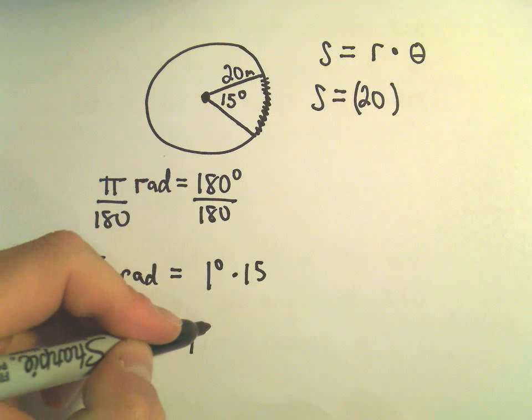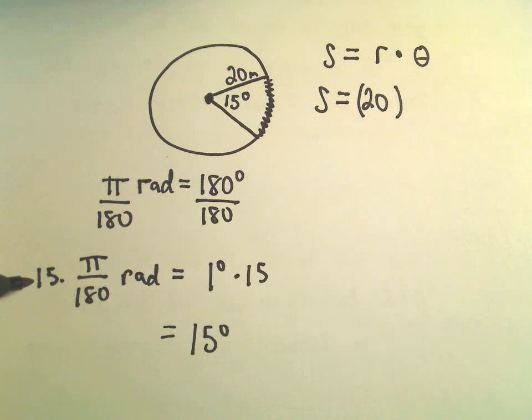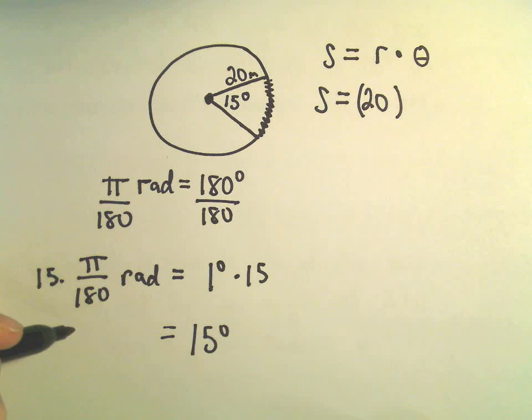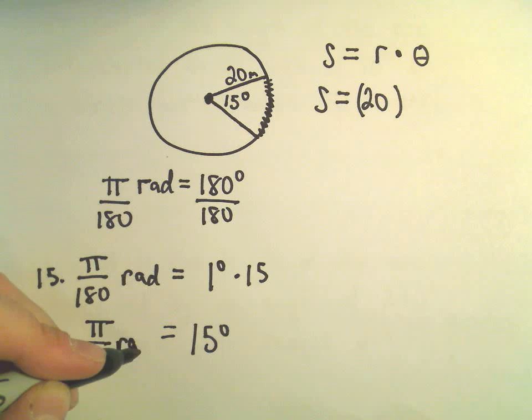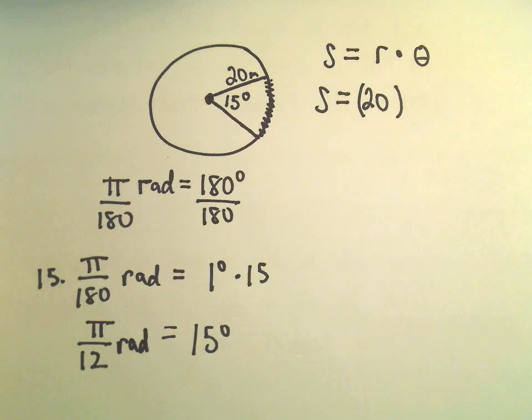So we'll have that 15 degrees is equivalent to, what's 15 over 180 reduced to? I think, let's see, so if we divide it by, so if it was 150 it would be 10, it looks like we're going to get, it looks like 1 over 12. So pi over 12 radians is going to be equivalent to 15 degrees.